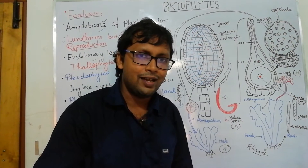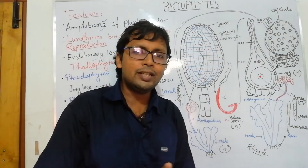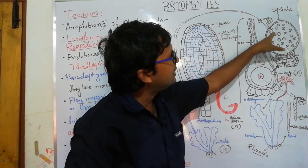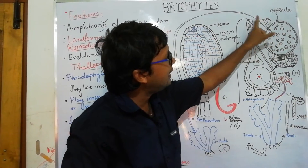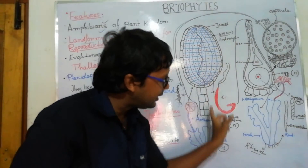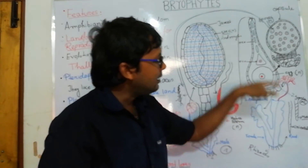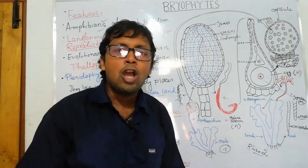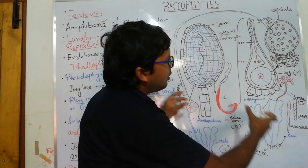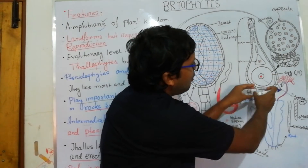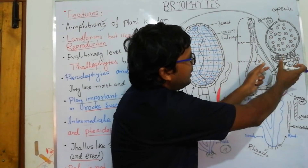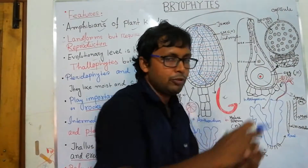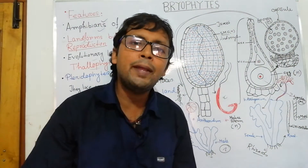From the meiotic spores, the gametophytic body is born — that is a haploid body. The spores germinate to form male plants and female plants. The female gametes develop, then the zygote forms, then the sporophytic body develops, and then spores are produced again — completing the life cycle.